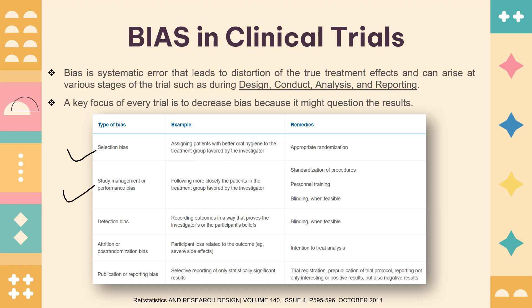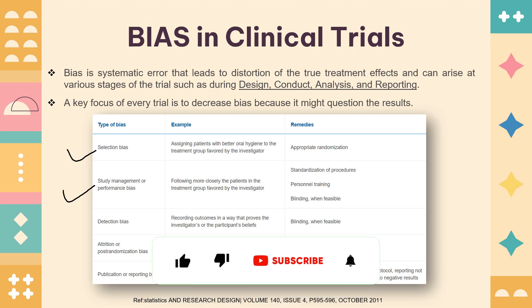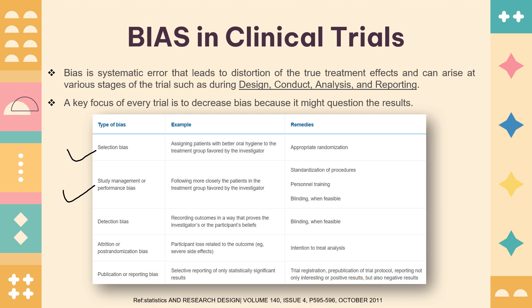The second type is study management or performance bias. If a study participant has more contact with the study team, they may be monitored more closely, and nuances of treatment and adverse event reporting may not be captured equally for all participants. To rectify this, you standardize procedures, train personnel to avoid bias, give everyone the same treatment, and perform blinding so no one knows what treatment is being given.